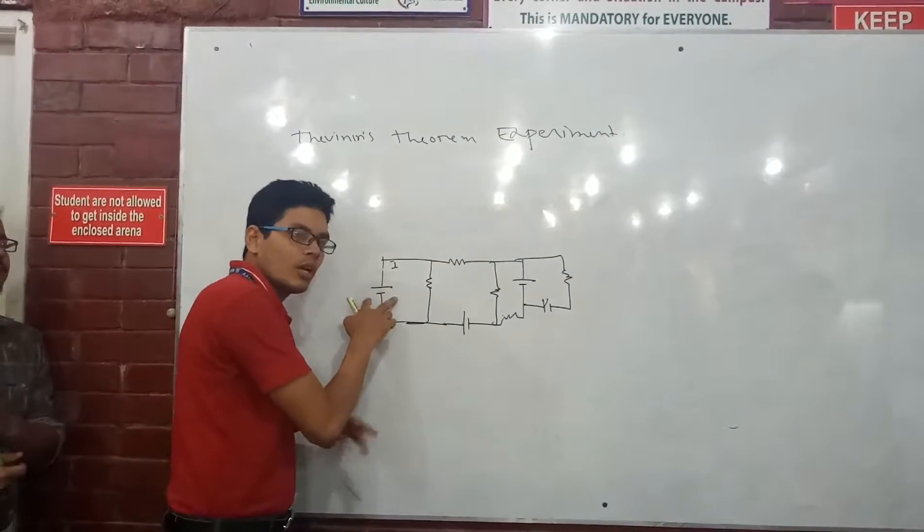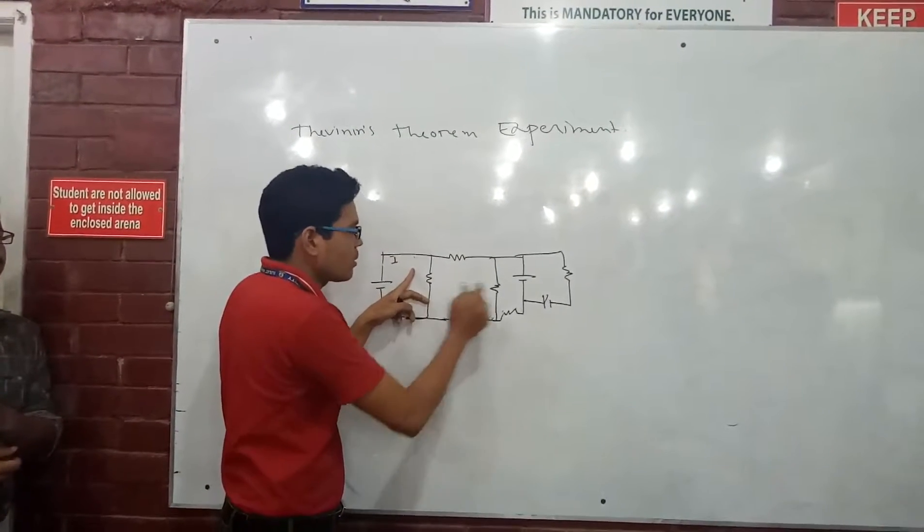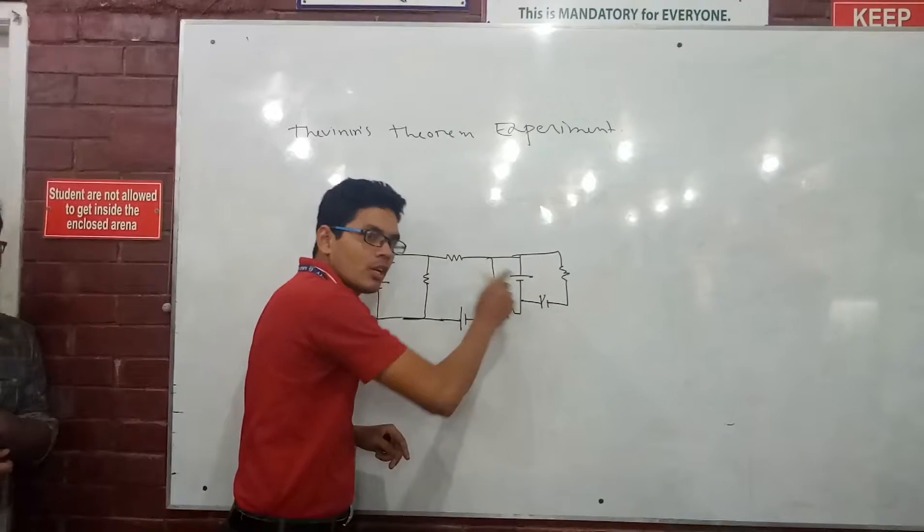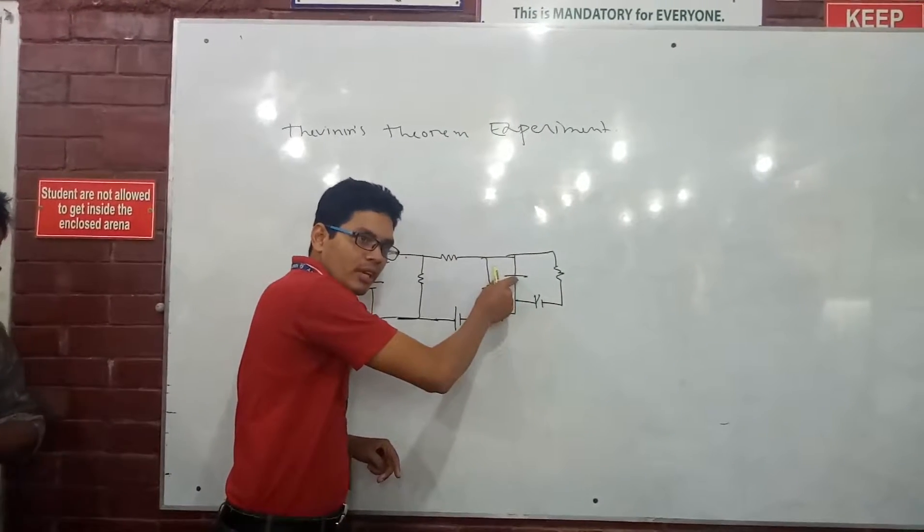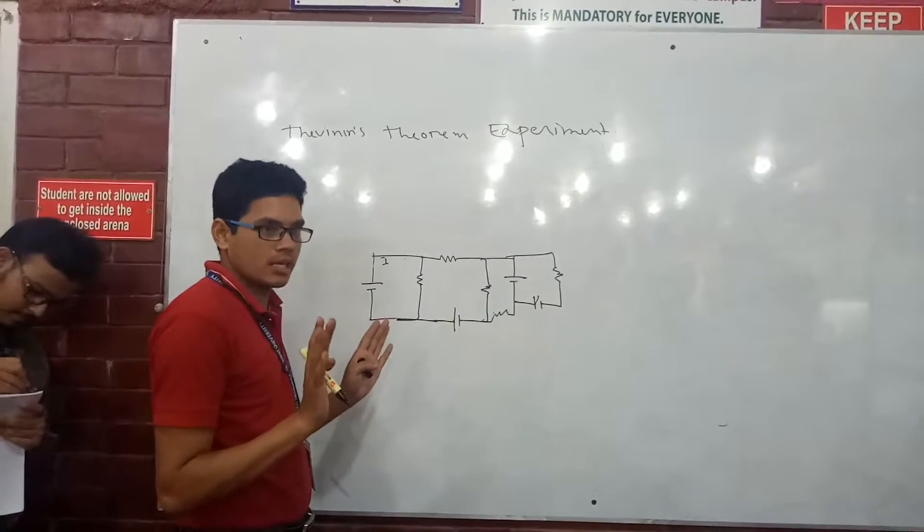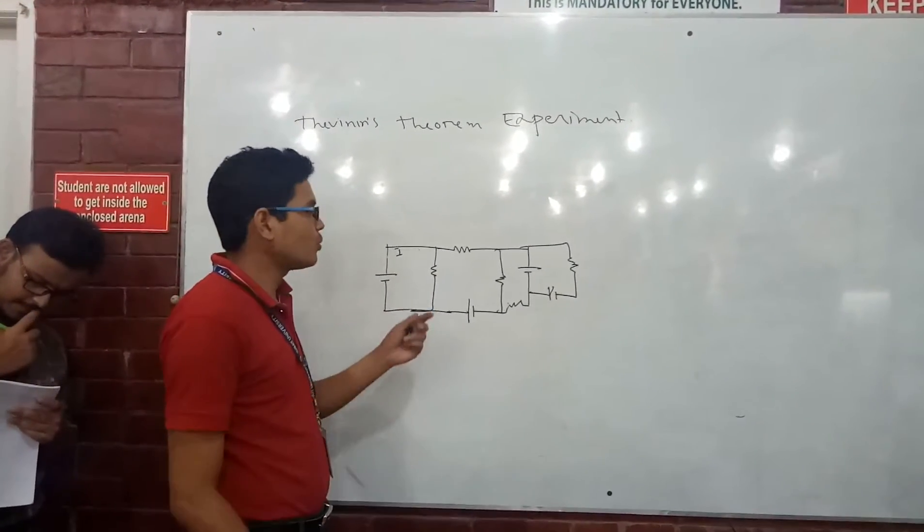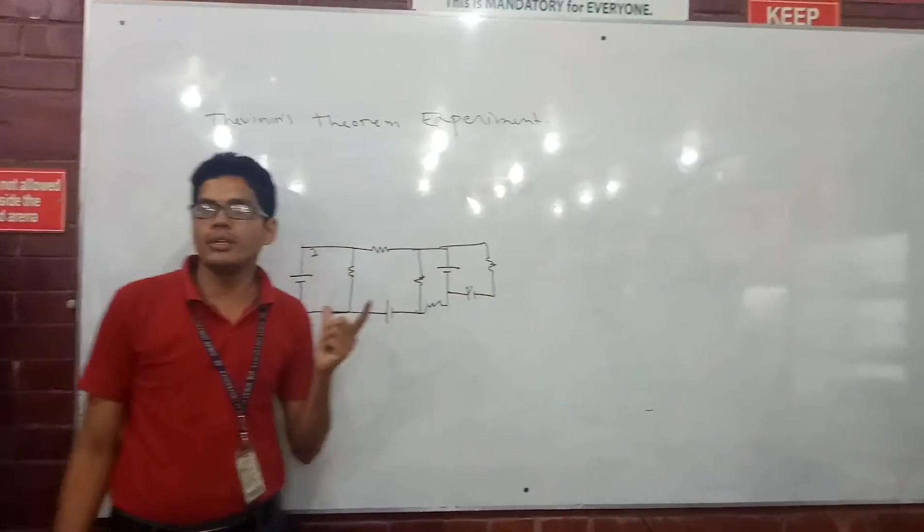But with multiple sources - current starts from here, current starts from here, this is a source, this is another source - that means you cannot find the total current directly. It's not possible.